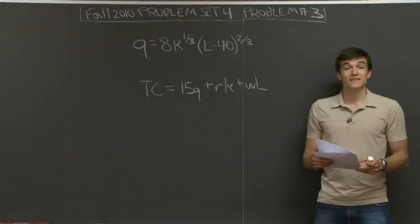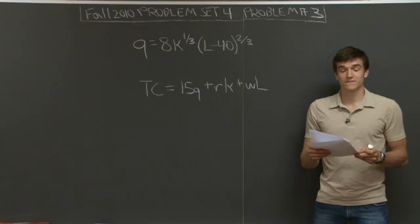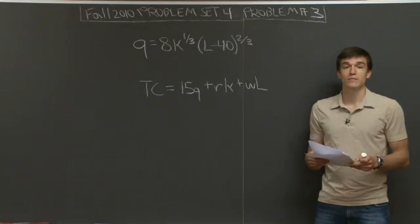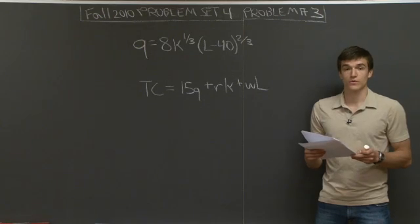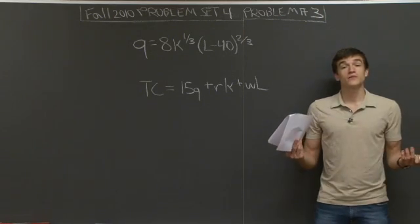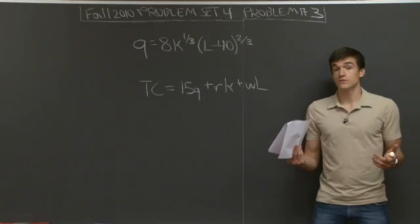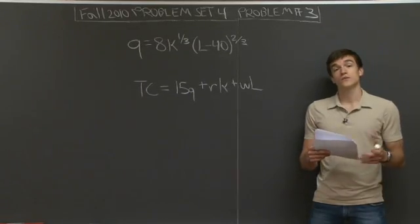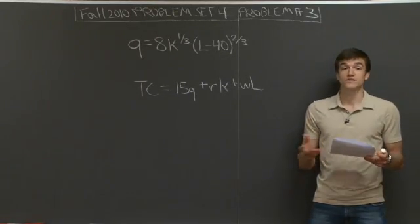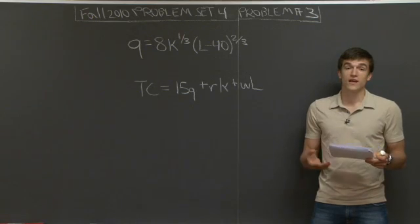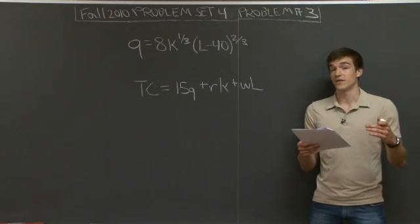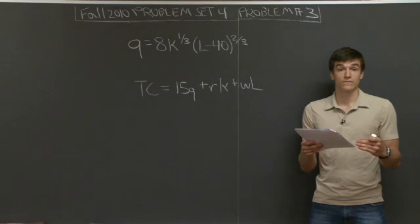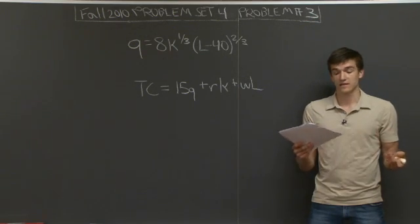Welcome back to the 1401 Problem Solving Videos. Today we're going to work on Fall 2010, Problem Set 4, Problem Number 3. This problem is really going to take us through two scenarios. We're dealing with producer decisions, so instead of dealing with utilities, we're going to be working with cost functions. We're going to first go through the short run scenario, then the long run scenario, and the implications of both.